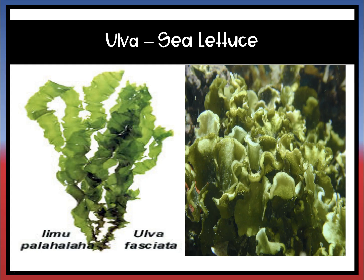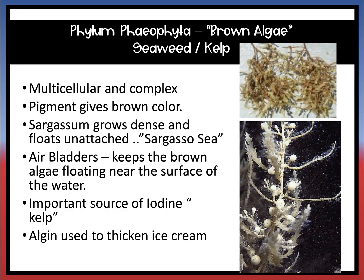Ulva is also known as sea lettuce. The next phylum is phylum Phaeophyta, which is your brown algae — seaweed and kelp are examples. They are multicellular and complex, and their pigment gives them a brown color. A neat feature is that they have air bladders, which you can see in the image, that keep the algae floating near the surface. Kelp is also an important source of iodine, and alginate from this phylum is used to thicken ice cream.